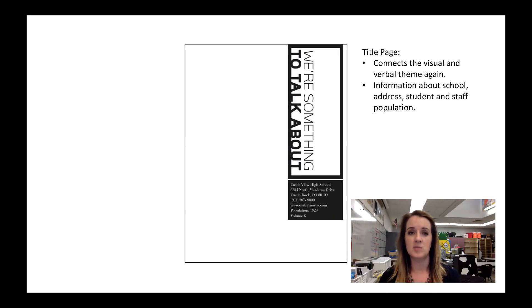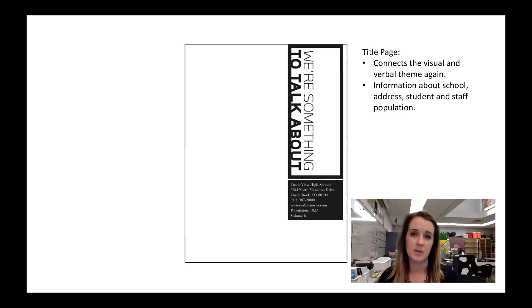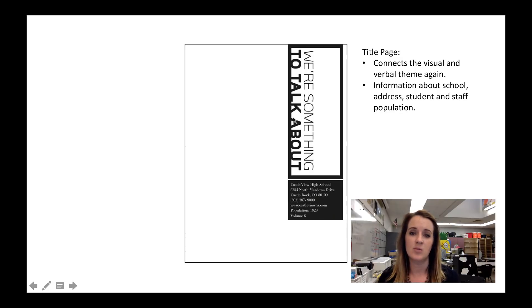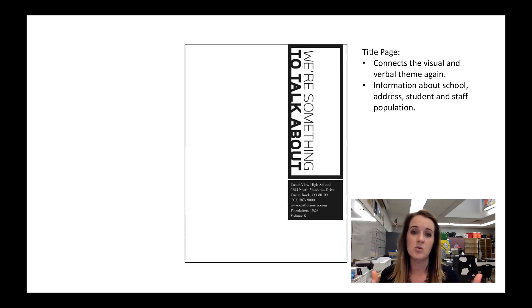Here we can see the title page, which comes after the Table of Contents. The title page is pretty basic and informational for the school — it's got the name of the school, the website, the address, the phone number, student population, staff population, and principal for that year. It's a reference section, fulfilling that reference purpose of a yearbook. We can see that they're tying in 'We're Something to Talk About,' but now they've flipped and inverted the colors we saw on the cover. Rather than having the type in white, we now have it in black, resting on a white box instead of a black box — still the same visual tie-in, but flipped and reversed, playing with the same elements but rearranging them to make them new and interesting for the viewer.